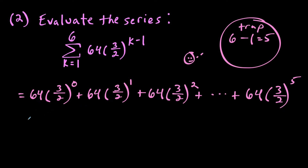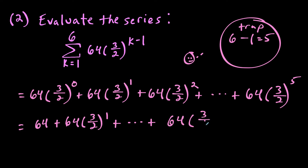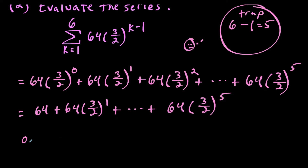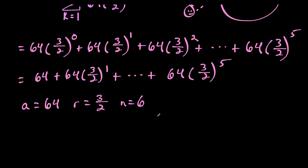Expanding further, we have 64 times 1, then 64 times 3 halves to the first, and so on up to 64 times 3 halves to the fifth. This tells us that a equals 64 and the common ratio r equals 3 halves. The value of n is 6, since we're adding 6 terms together.